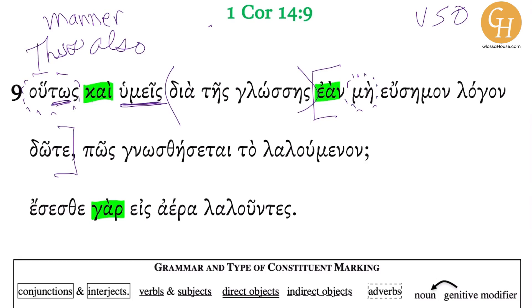This humeis is really going with the dote, which is subjunctive — aorist active subjunctive, second plural from didomi — 'you give.' What's happening is that this material here — the humeis dia tes glosses — is pulled out proleptically in front of its subordinate clause. This is for effect: to stress the agency of the 'you' in this comparison that Paul is making from the previous context. He's building his argument.